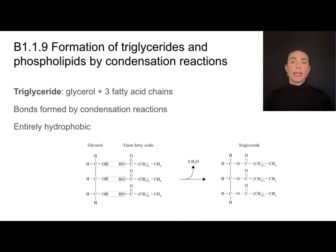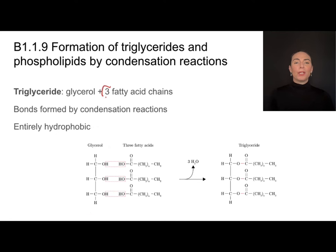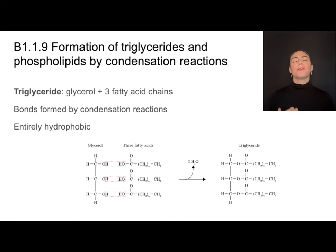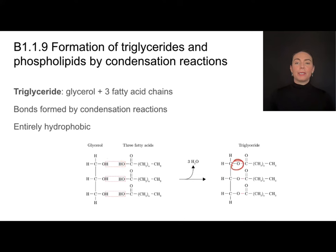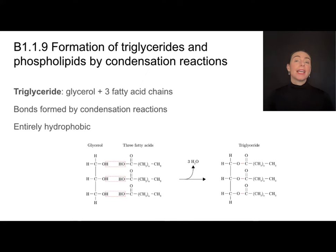To recap: a triglyceride is made up of glycerol — which serves as an anchor molecule — and three fatty acid chains. We bond them together by removing three water molecules in condensation reactions, leaving an oxygen bonded between each pair of carbons. If we do that three times, we get a triglyceride. This molecule is entirely hydrophobic — all parts are water-hating. That's going to be very different from phospholipids, which are amphipathic — meaning the molecule has two regions with different properties, like an amphibian that is part on land and part in water.